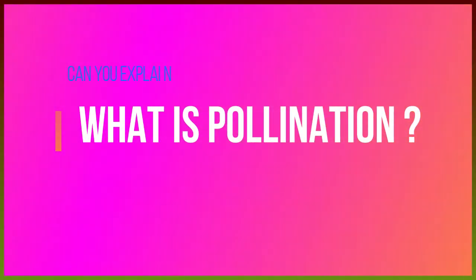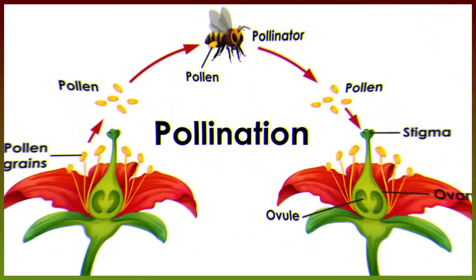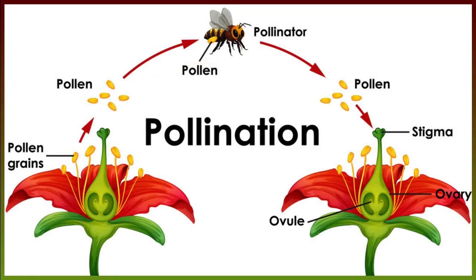What is pollination? Pollination is an essential part of plant reproduction. It is the transfer of pollen from an anther, the male part of a plant, to the stigma, the female part of a plant. Pollination can be carried out in different ways, such as by bees or bats.